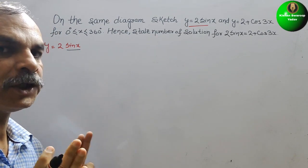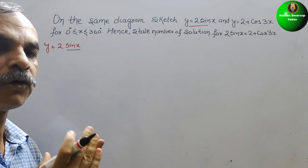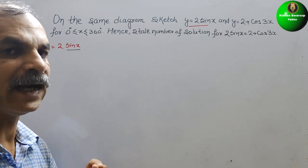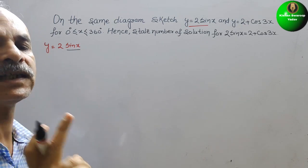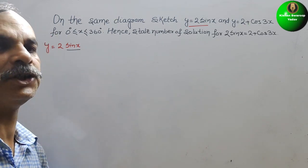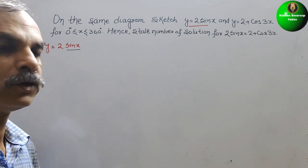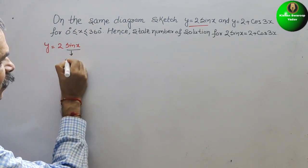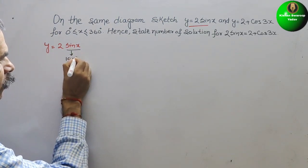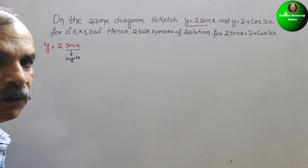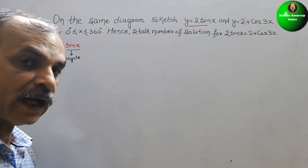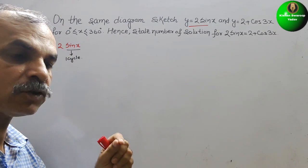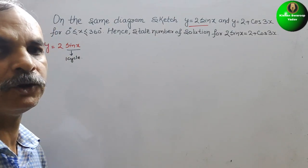The duration should be from 0 to 360 only. We know that a sine wave completes one cycle in 360°, so we will draw one cycle. The sine wave moves between amplitude +1 and −1.